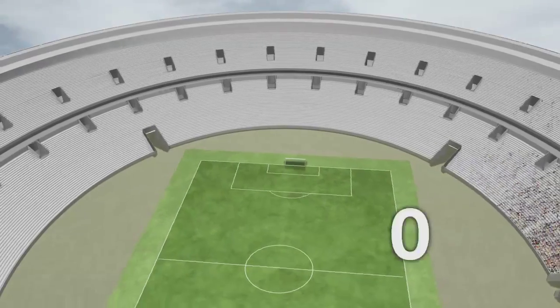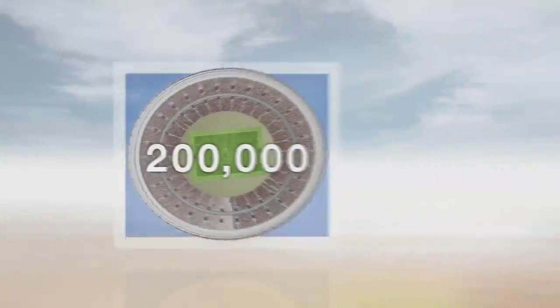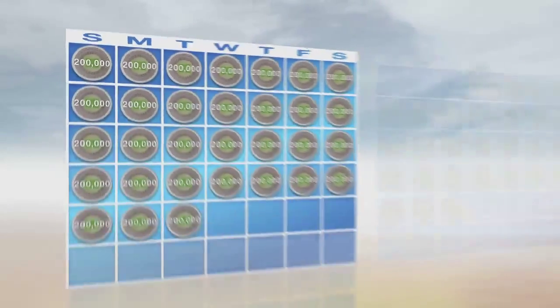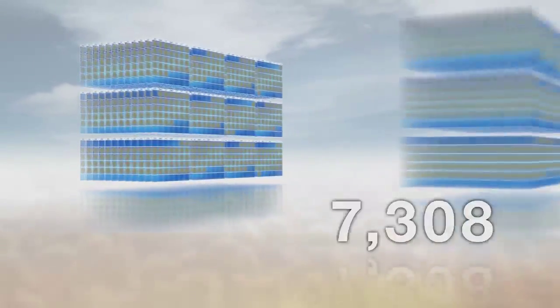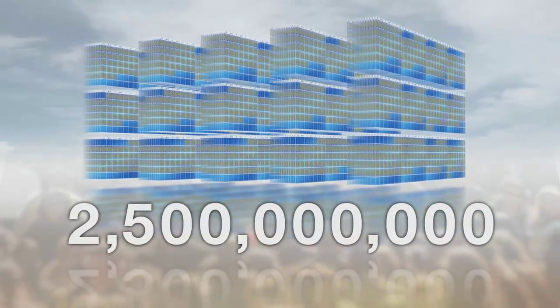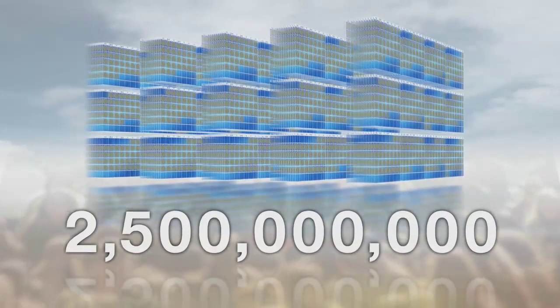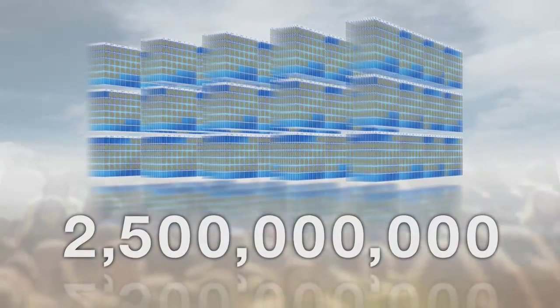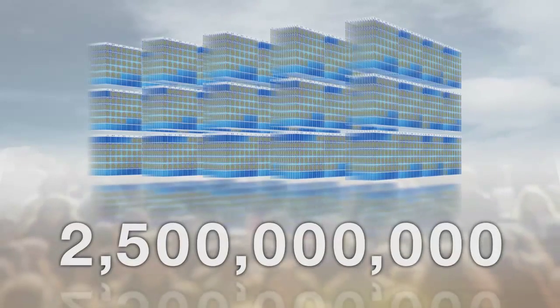Every day the global population rises by 200,000. Over the next 50 years, we're going to have to feed 2.5 billion more people, which means that we must achieve the efficiency required to produce more food than we've produced over the last 10,000 years.